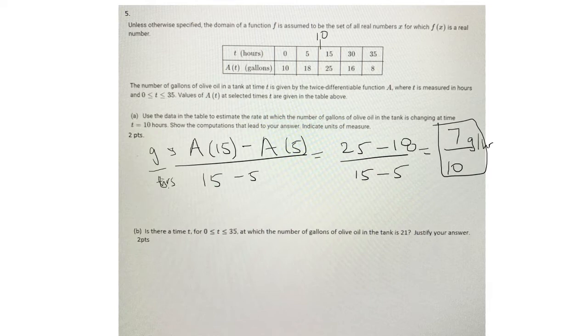So for part b, is there a time t for t being between 0 and 35 at which the number of gallons of olive oil in the tank is 21? Just justify your answer.